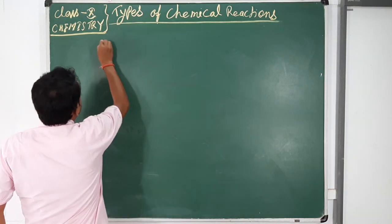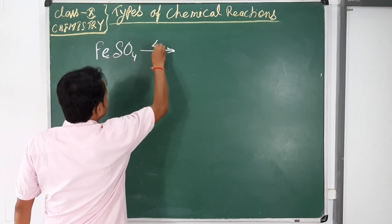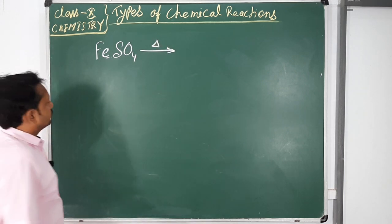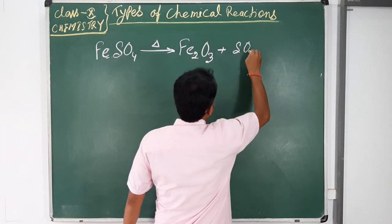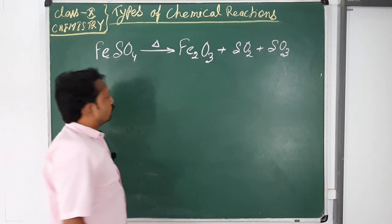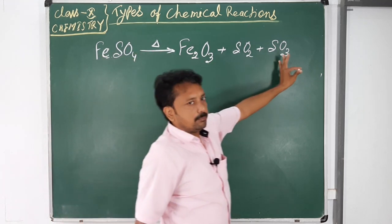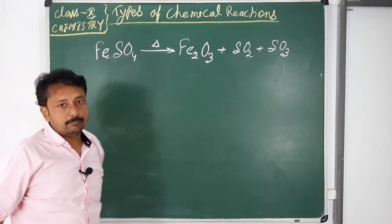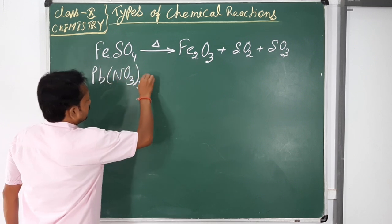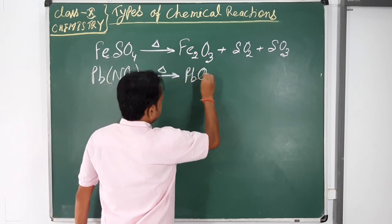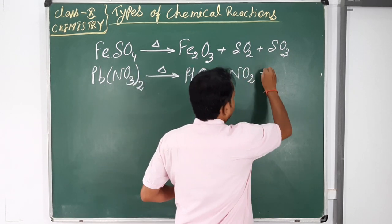For example, if we heat iron sulphate strongly in the absence of air, it forms iron oxide, sulphur dioxide, and sulphur trioxide. In this reaction, one reactant after heating decomposes and forms three different products — making it an example of a decomposition reaction. Similarly, when we heat lead nitrate, it forms lead oxide PbO, nitrogen dioxide NO₂, and oxygen.